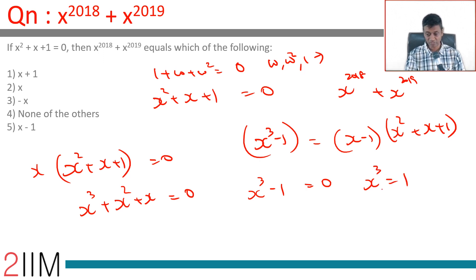If x³ = 1, then x^6 = 1, x^9 = 1, x^1200 = 1, x^1800 = 1. x to any multiple of 3 equals 1. Is 2018 a multiple of 3? No, it is not. 2019? Yeah, that is a multiple of 3.